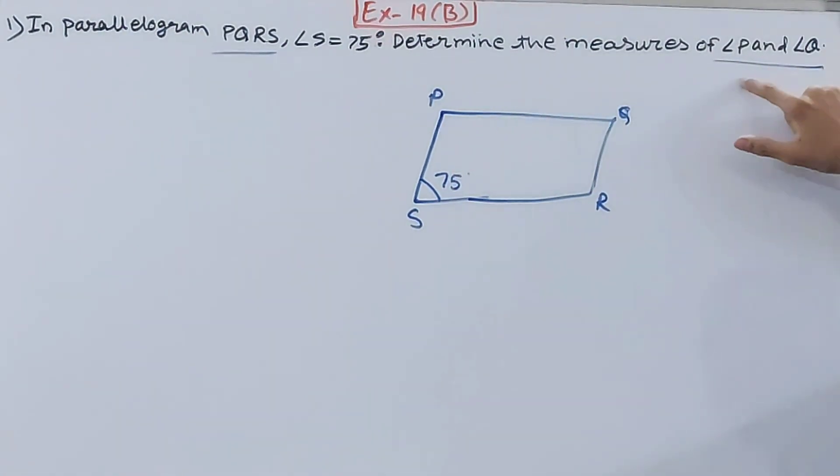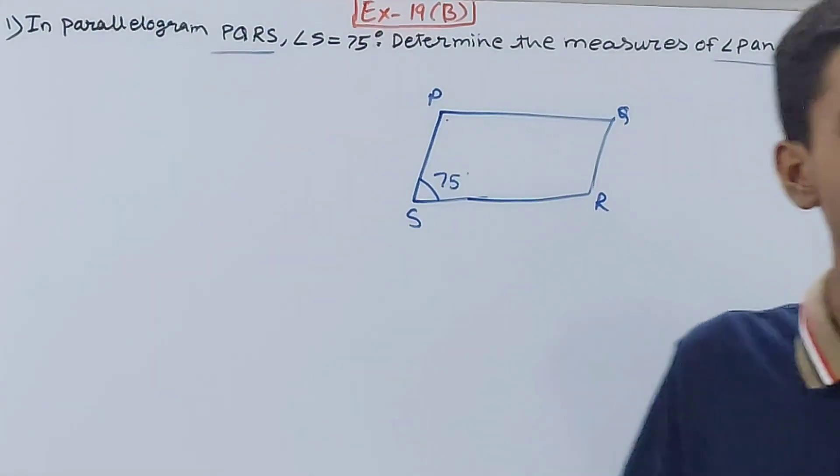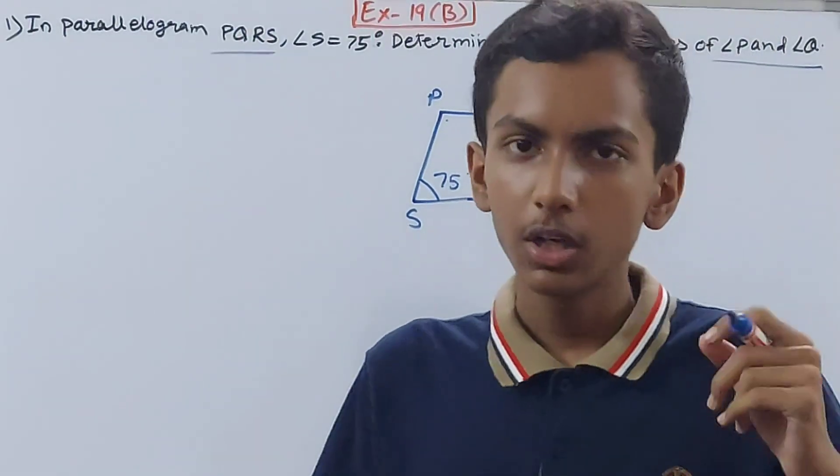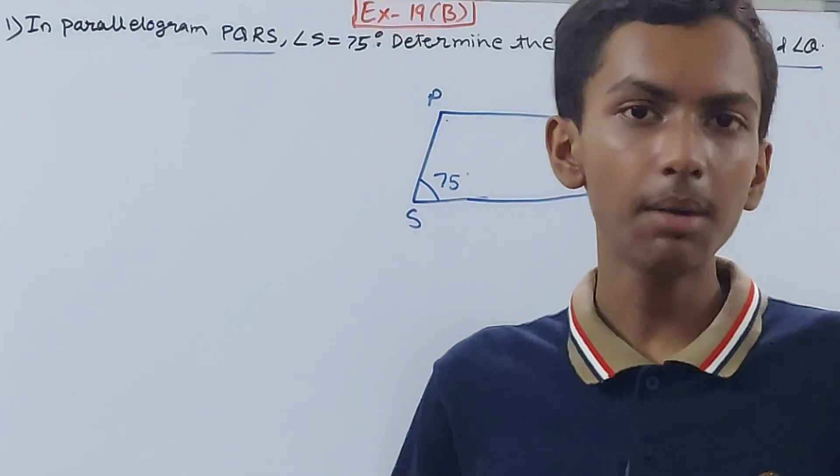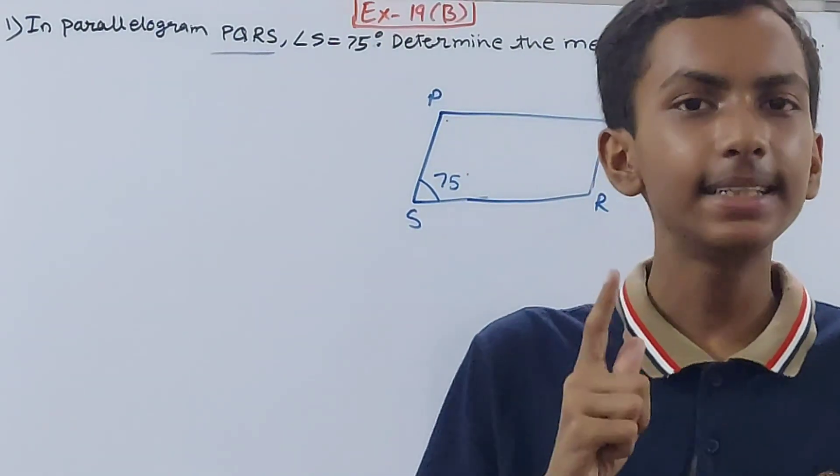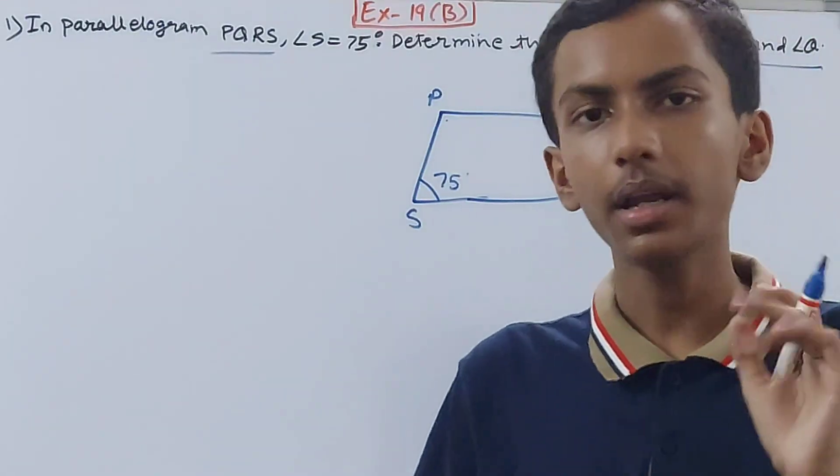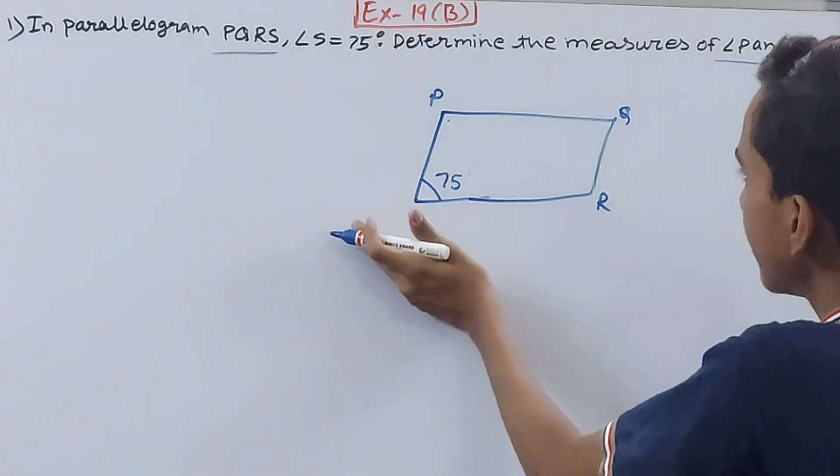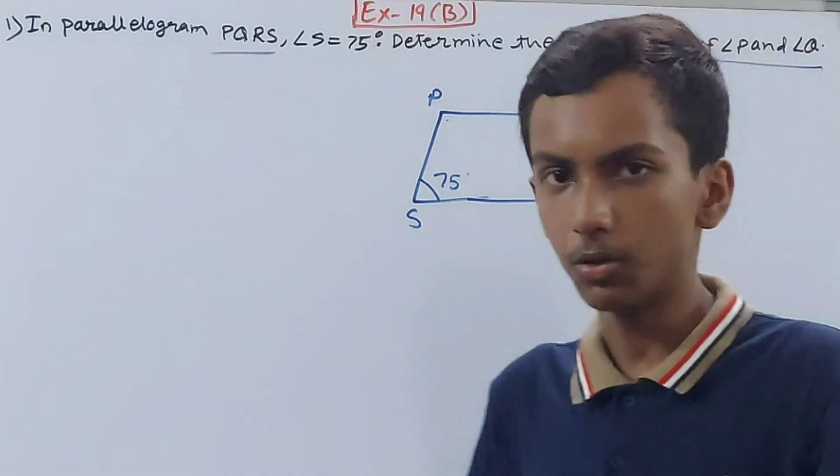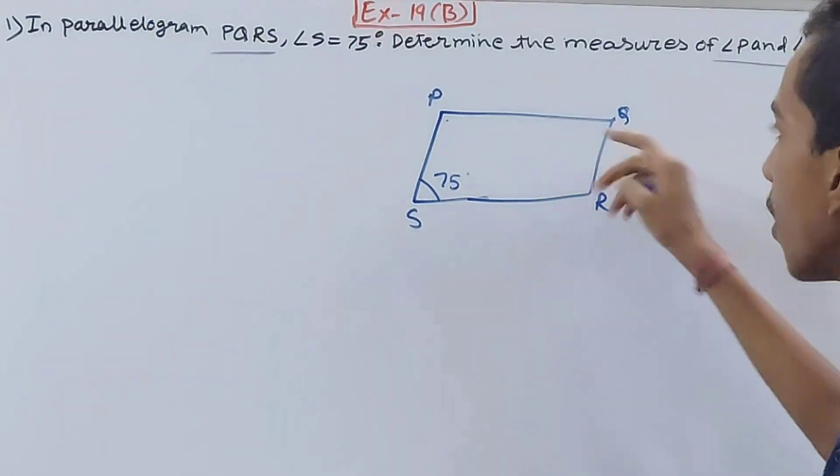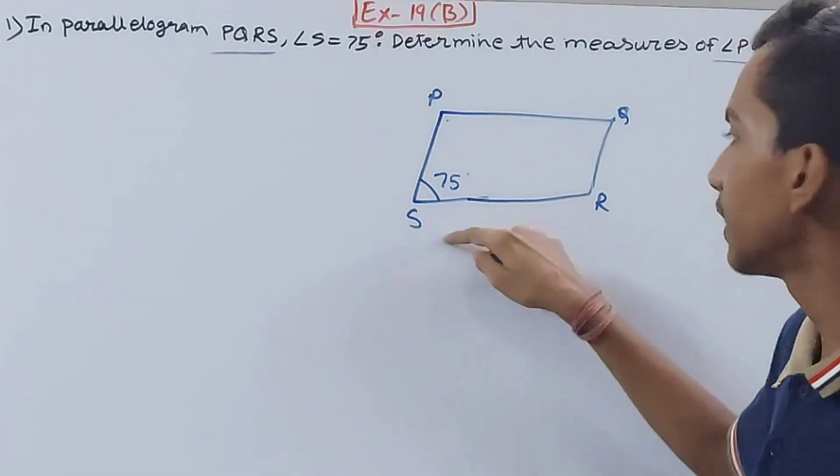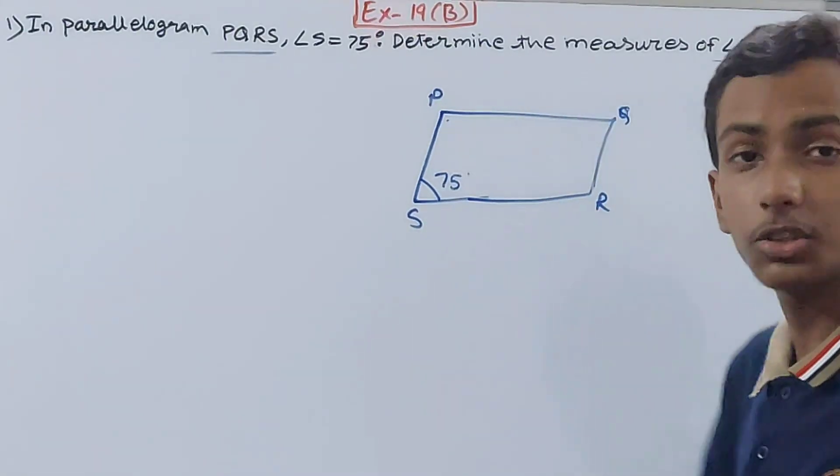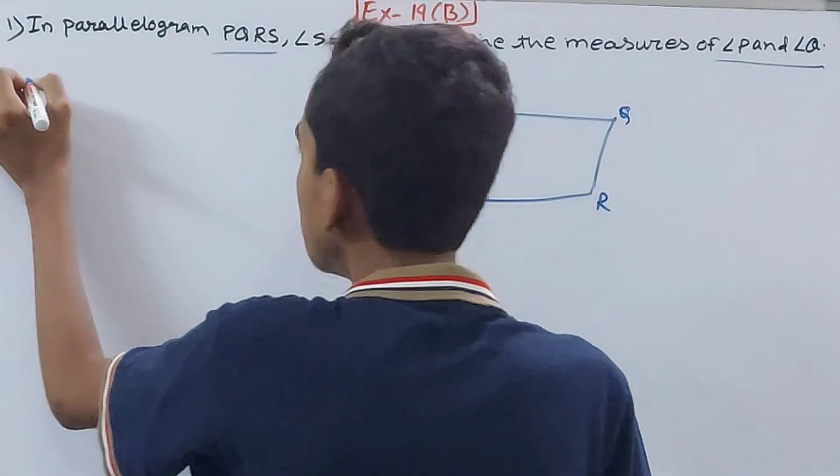And we have to determine the measures of angle P and angle Q. Very simple. We're going to use a property: the property of the parallelogram that says the opposite sides and angles of a parallelogram are equal. This is angle S. Which is the angle opposite to angle S? Angle Q. Because opposite angles don't have any common arm. Angle P and angle R share their arm with angle S, but this is different completely.